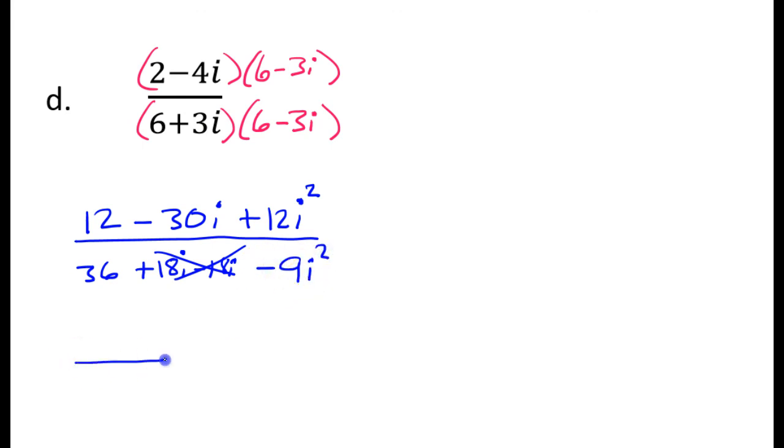So let's see what happens next. So this will be 12 minus 30i minus 12 because the i squared is a negative 1, which makes this a negative 12. Now I've got the 36. These canceled out. And this will become plus 9 because the i squared is a negative 1. And a negative times a negative is a positive. So let me bring the action back up to the top of the screen.